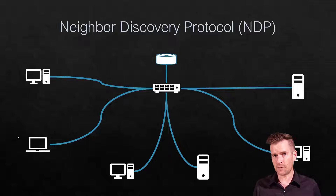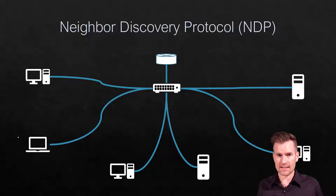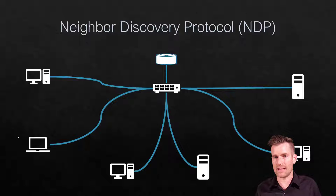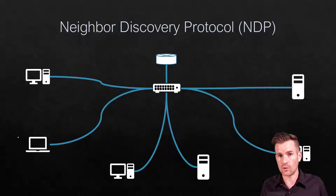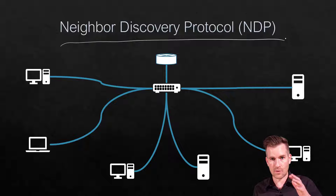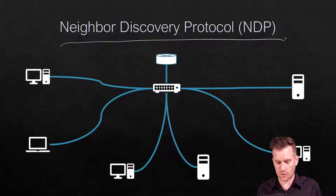Neighbor Discovery Protocol is a key part of IP version 6, and it does several different things. Number one, there is not an equivalent of ARP. There is no broadcast that can be sent out to find out MAC addresses of machines. So we do it through multicast, and we do it through Neighbor Discovery Protocol. So we discover MAC addresses — that translation between IP addresses and MAC addresses — using Neighbor Discovery Protocol.